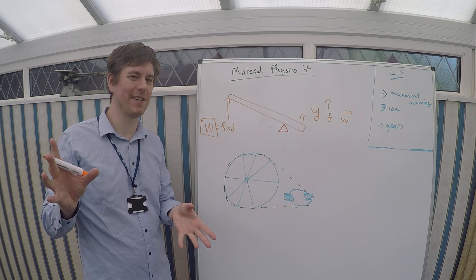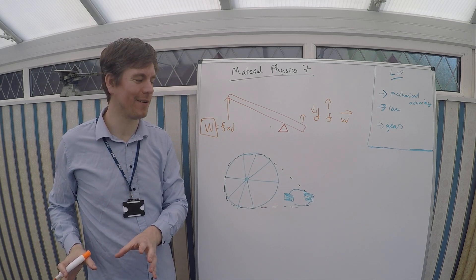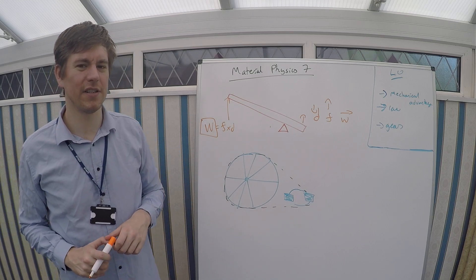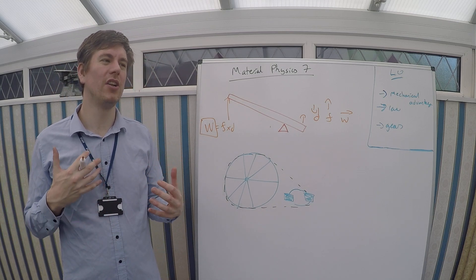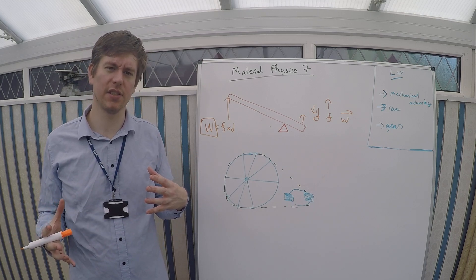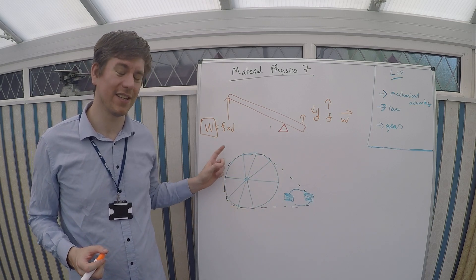So it turns out it is a conservation law, but it's an energy conservation law, not a force conservation law. This is called mechanical advantage. Mechanical advantage is whenever we can use something changing, a speed or a distance, to allow us to get the thing that we want. And we use this all the time when things are turning.